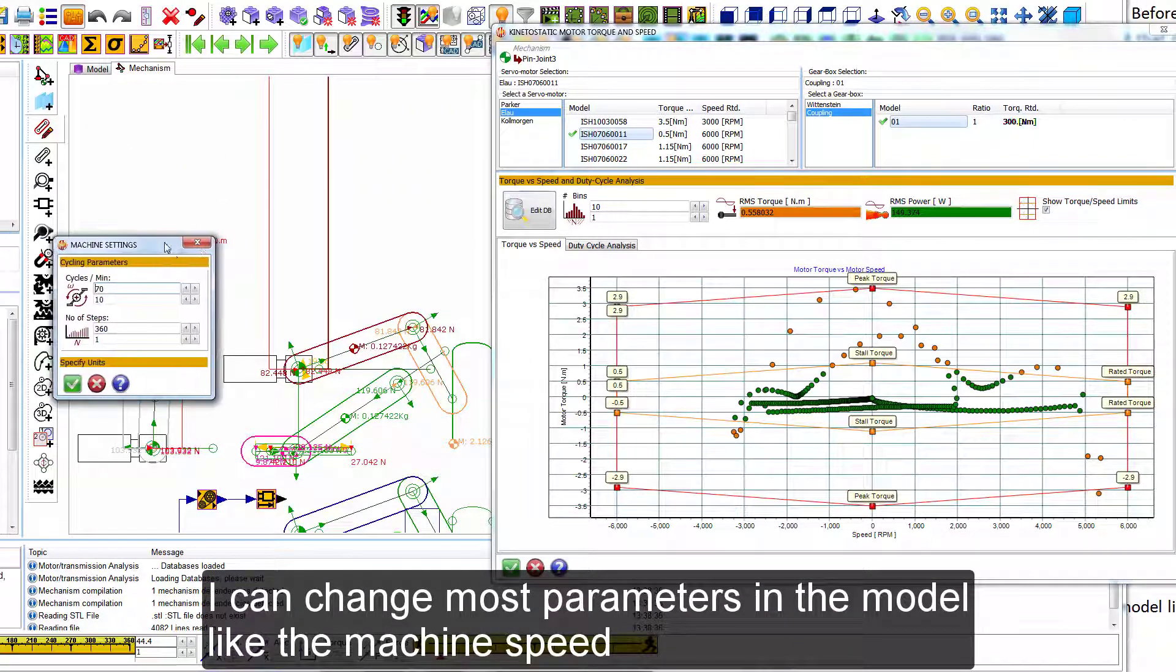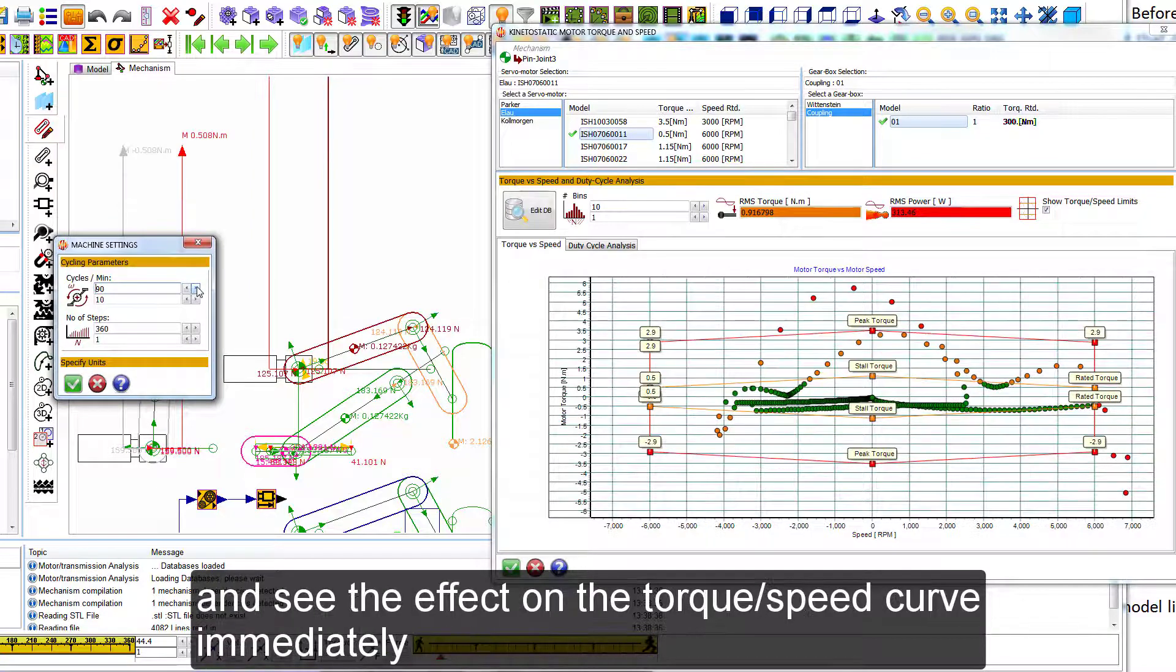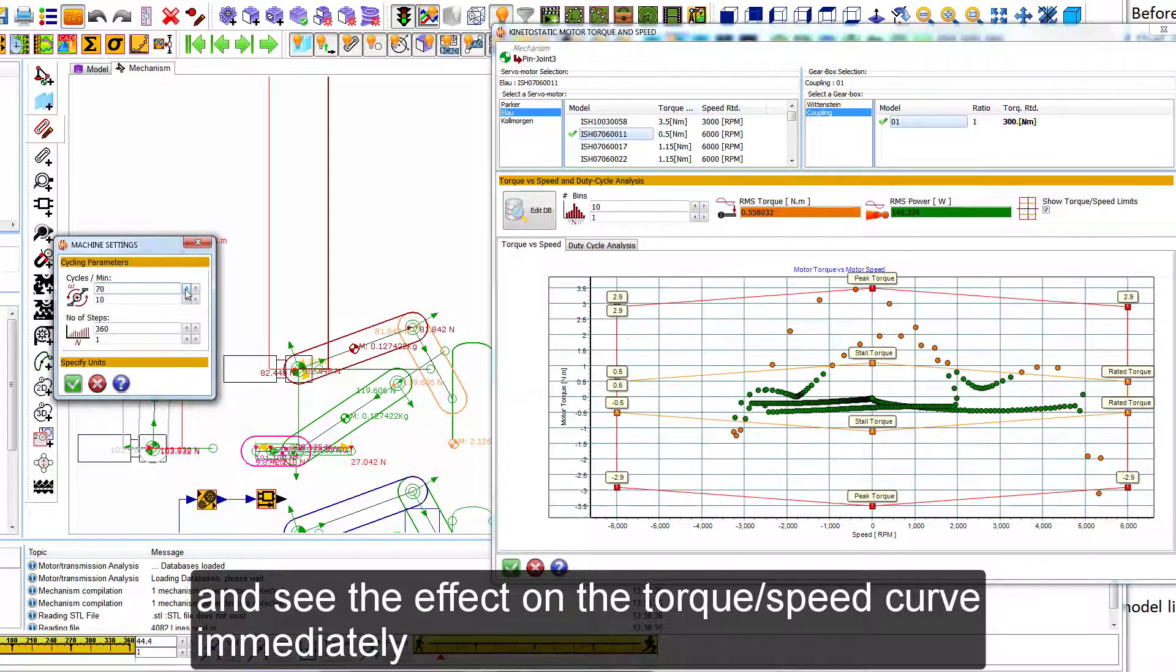I can change most parameters in the model, like the machine speed, and see the effect on the torque speed curve immediately.